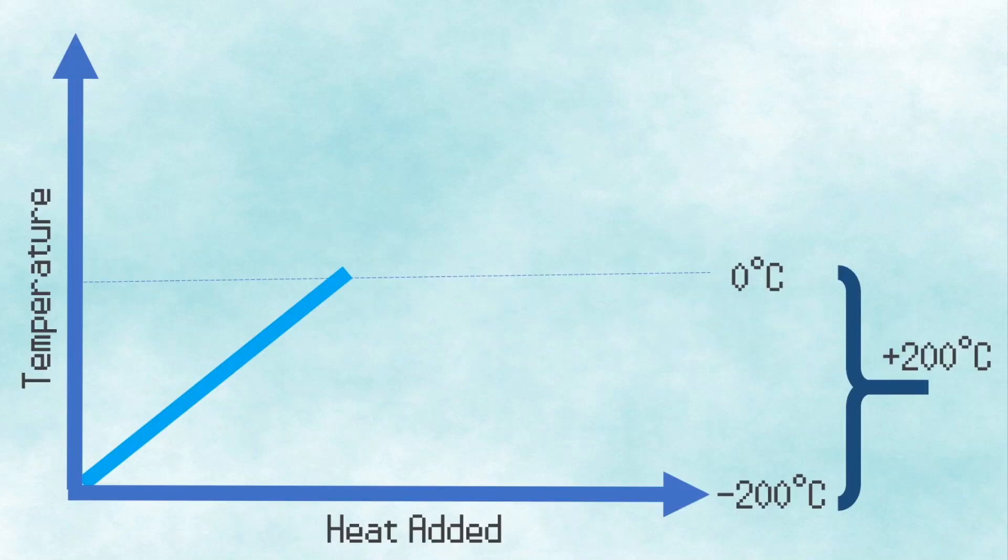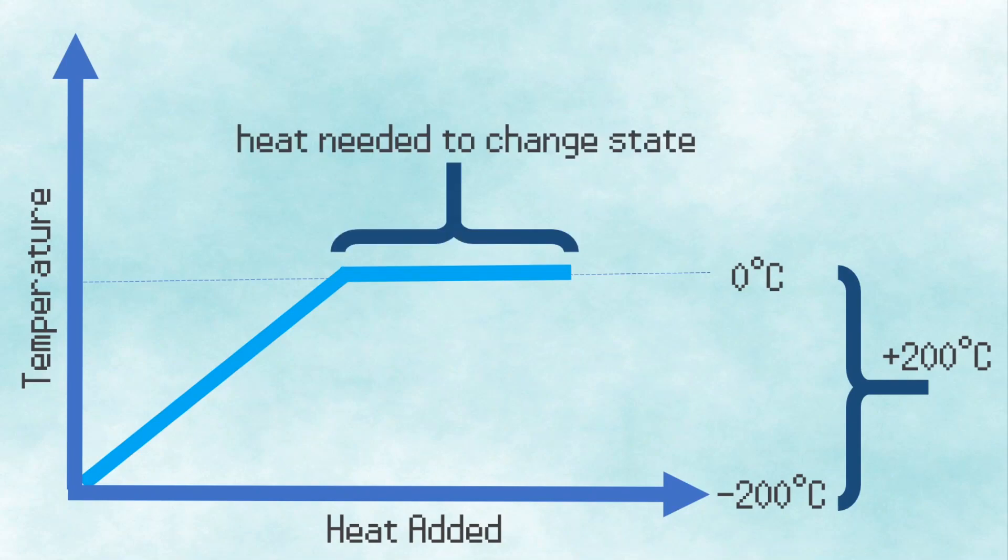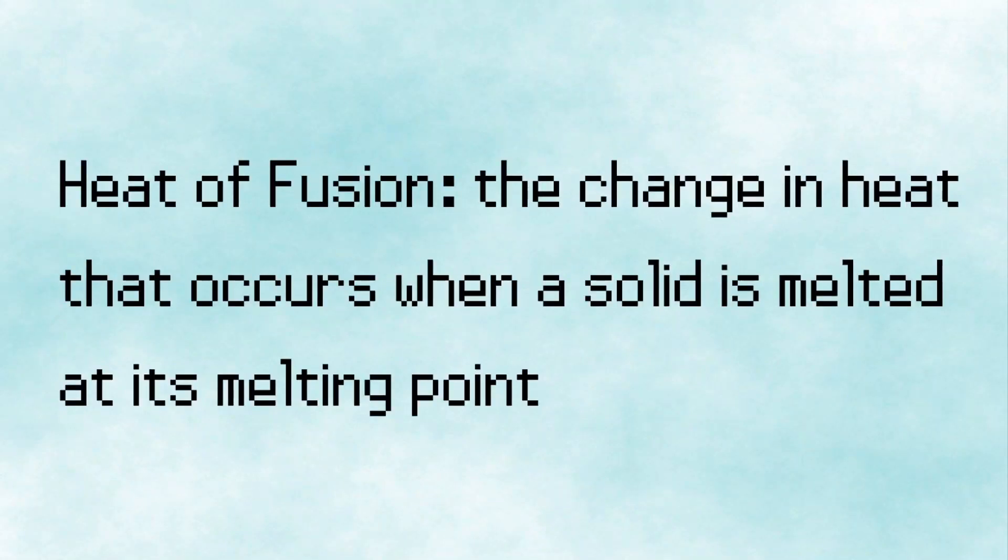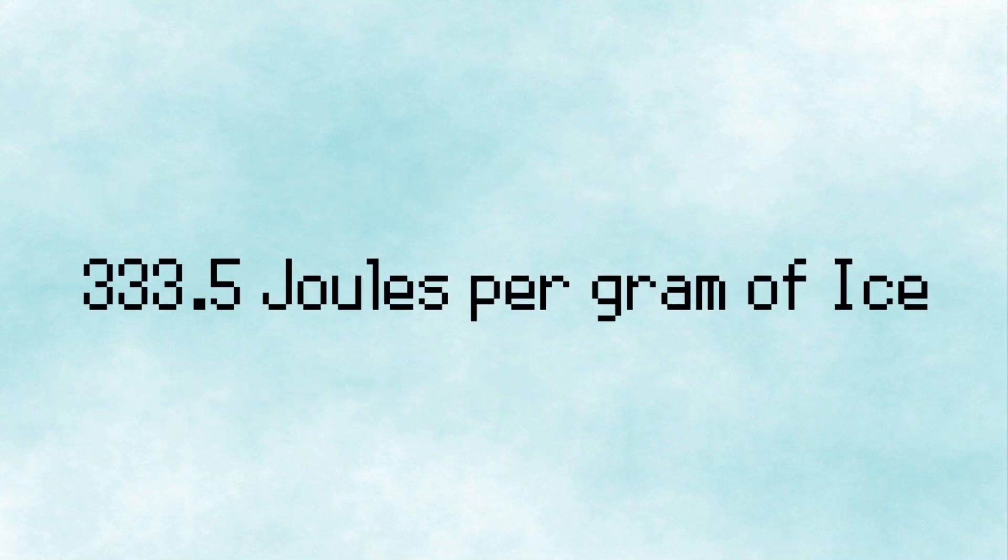Since we've reached the melting point of ice, we now have to calculate how much heat is needed to change Regice from a solid to a liquid, and thankfully this calculation is a lot easier. The heat of fusion is the change in heat that occurs when a solid is melted at its melting point, and for ice, this is approximately 333.5 joules of heat per gram of ice.